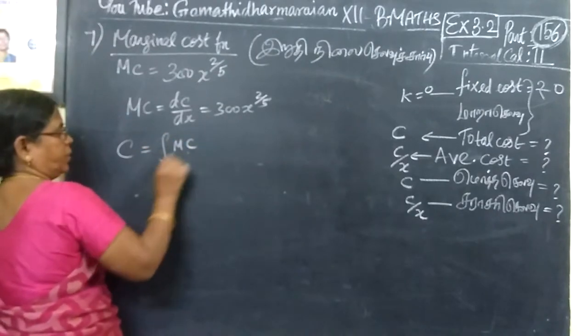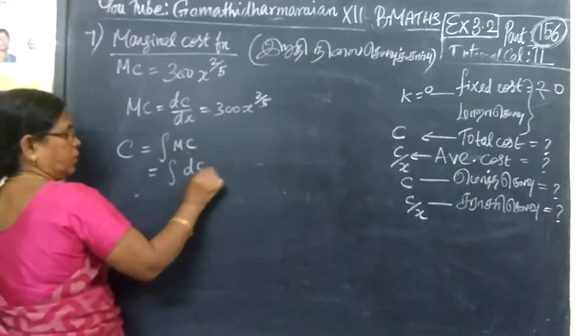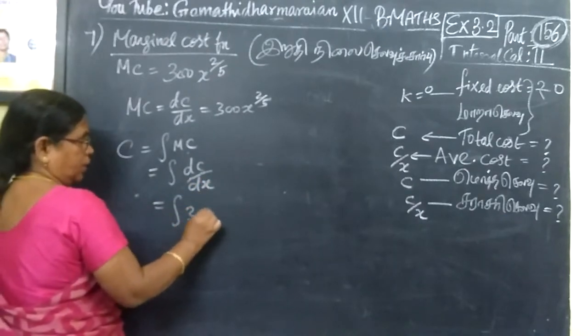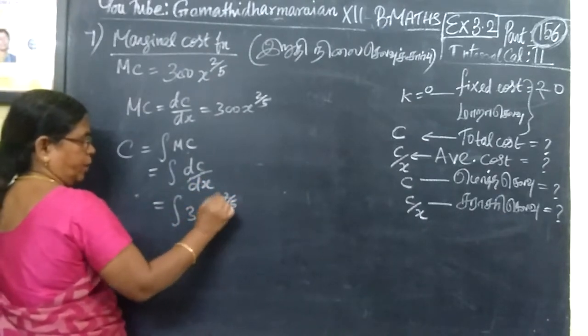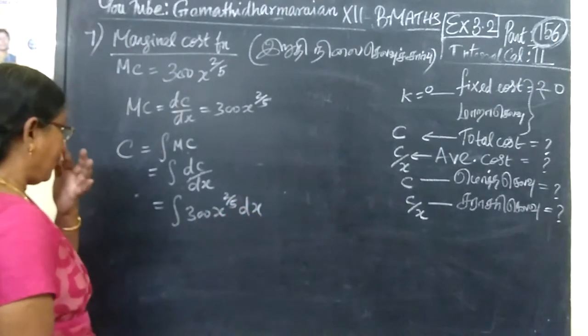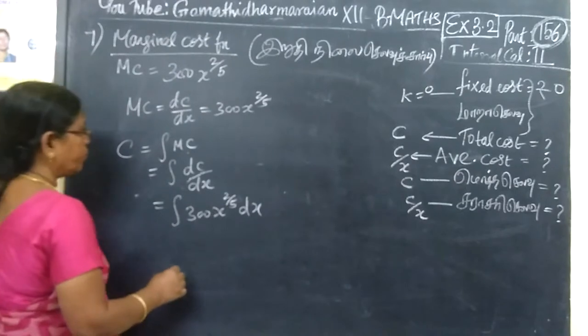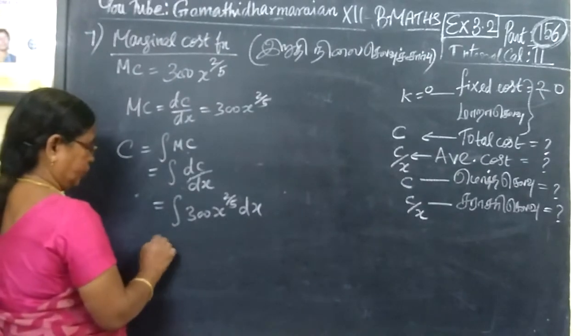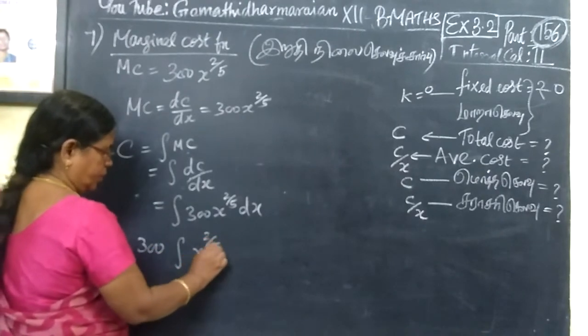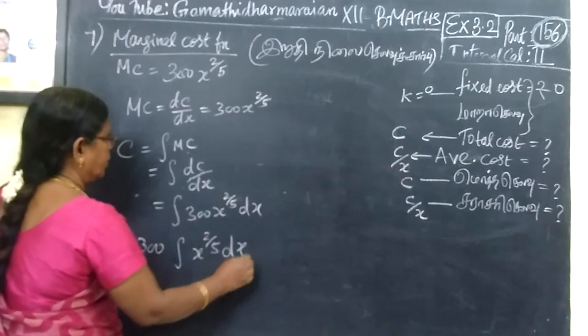So, total cost is integral of MC, or integral of DC by DX, or integral of 300x power 2 by 5.